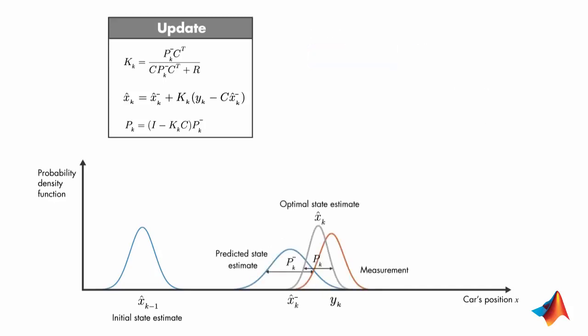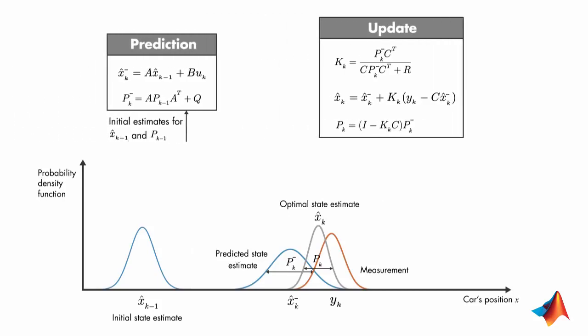Once we've calculated the update equations, in the next time step, the a posteriori estimates are used to predict the new a priori estimates, and the algorithm repeats itself. Notice that, to estimate the current state, the algorithm doesn't need all the past information. It only needs the estimated state and error covariance matrix from the previous time step and the current measurement. This is what makes the Kalman filter recursive.